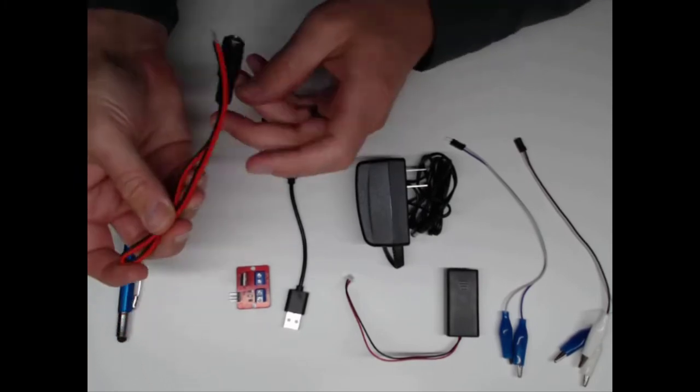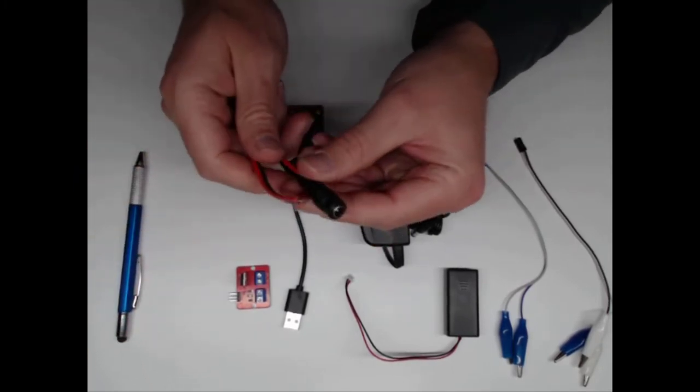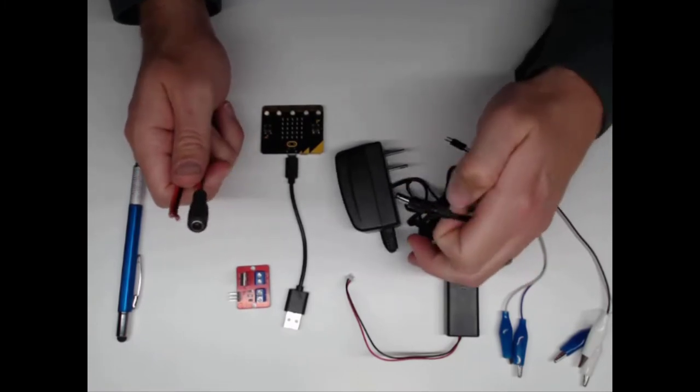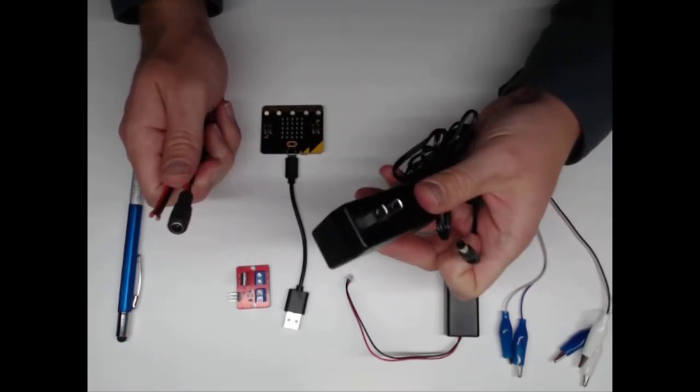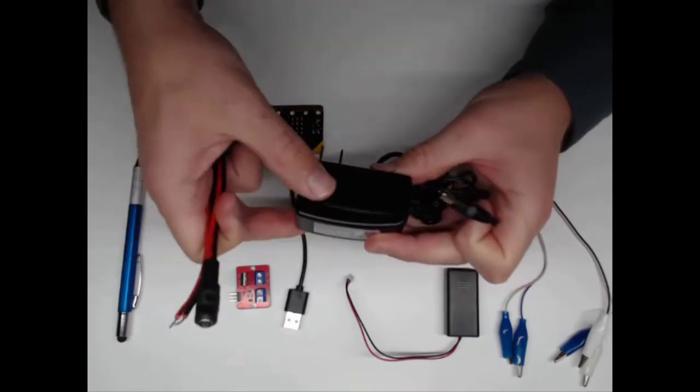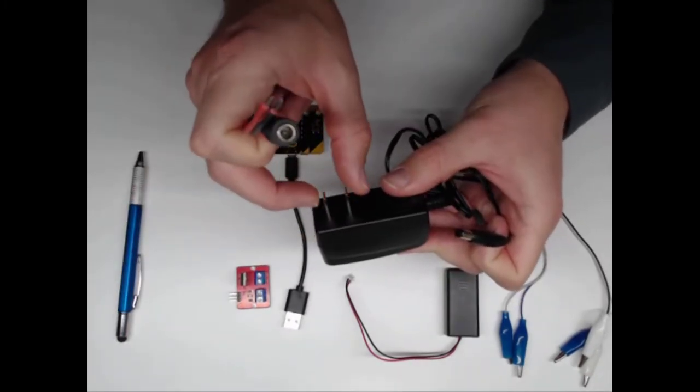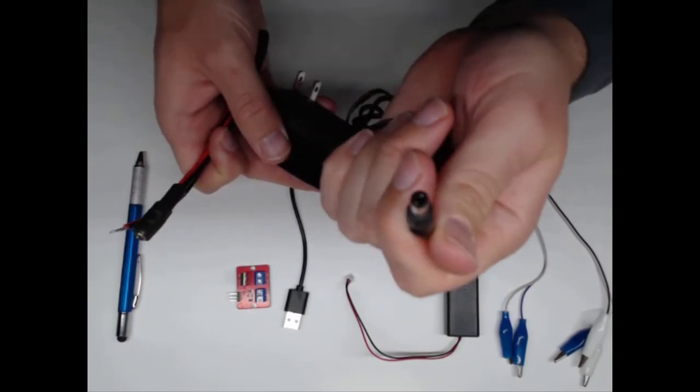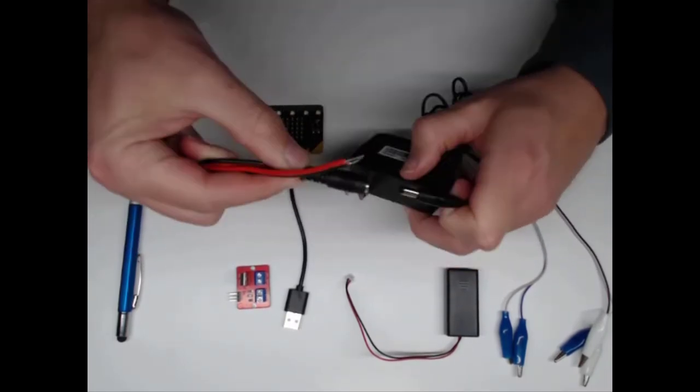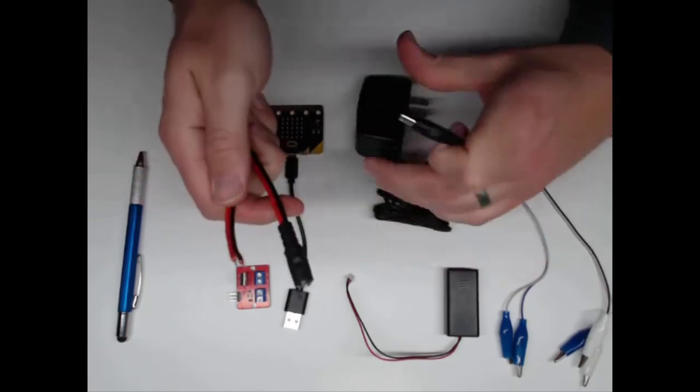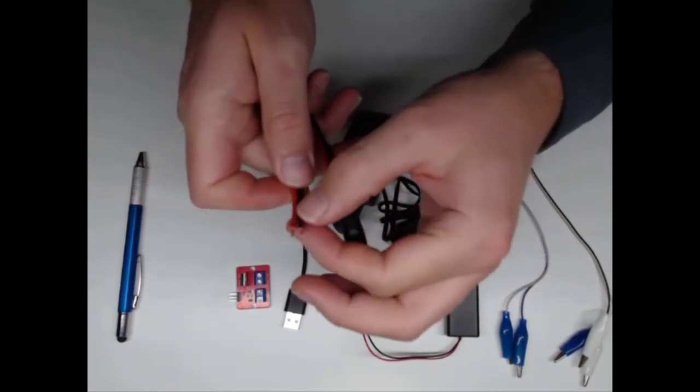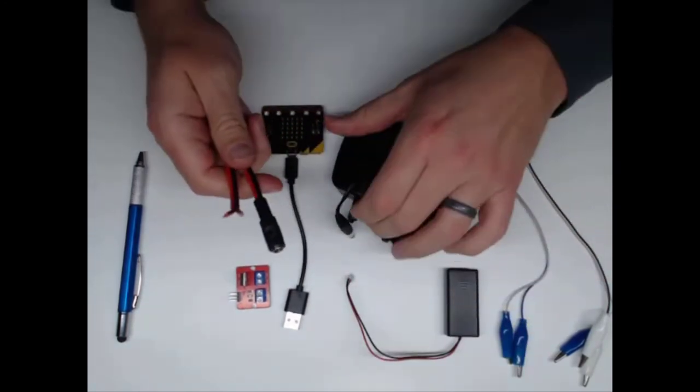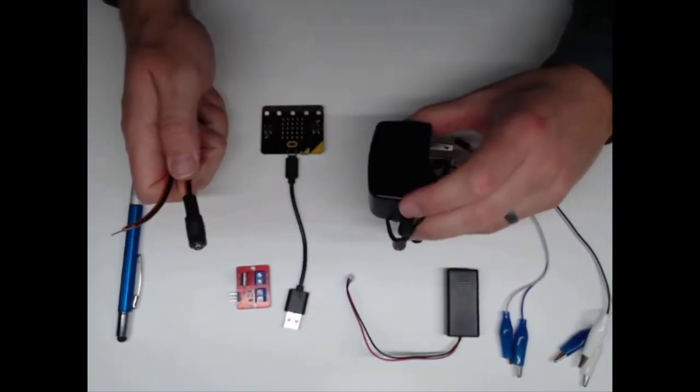This is called a pigtail. Basically it converts our DC adapters. This converts AC to DC. This thing converts 120 volts AC that goes in there to 12 volts DC which comes out here on the plug. So this hooks into there and converts that to 12 volts DC coming out of here. Now very important as I said in the safety warning, don't attach these yet.